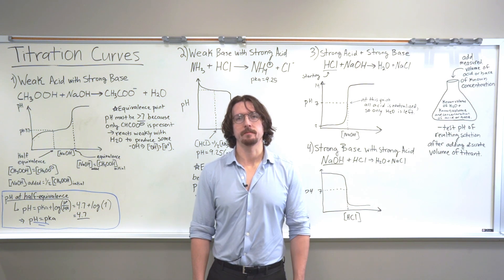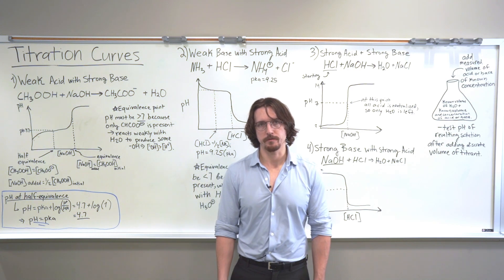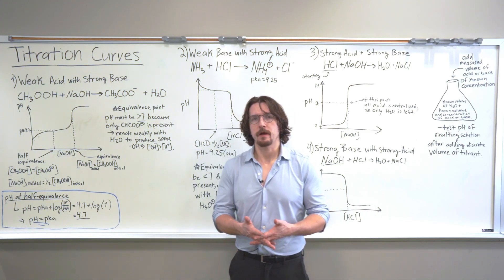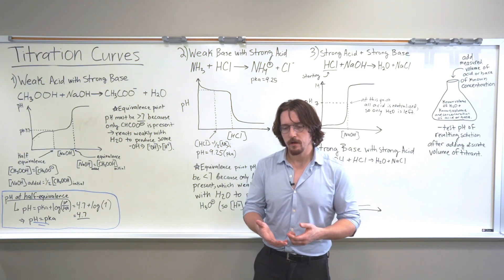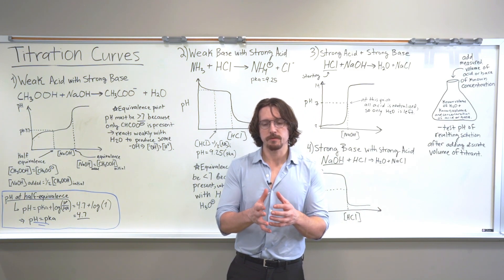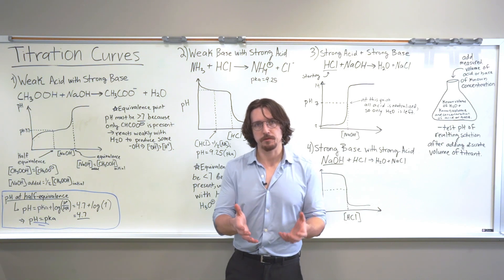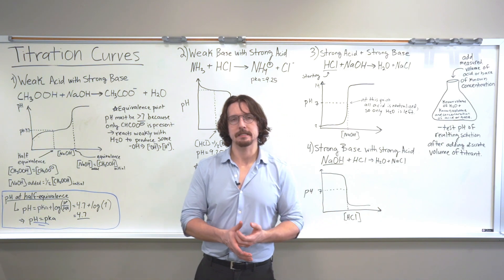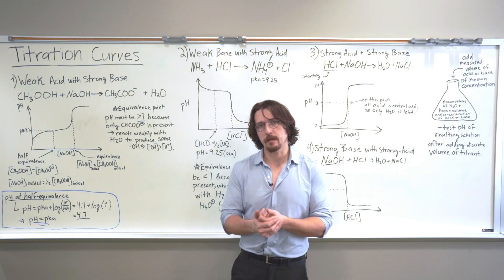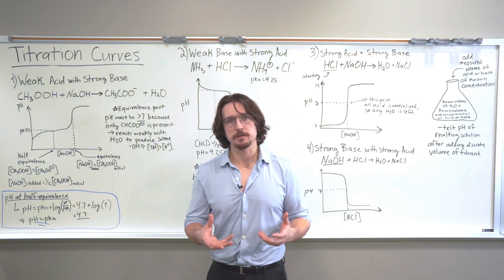Hello, this is Arkasha from MCAT Simplified. Today we're going to be talking about titrations and titration curves. In order to understand how titrations work and how these curves are created, we have to imagine that we have some sort of volumetric flask or container where we have an aqueous solution containing some known amount and concentration of an acid or a base that we're titrating. This is what we're going to call the analyte solution.